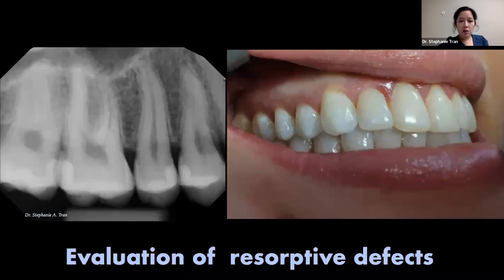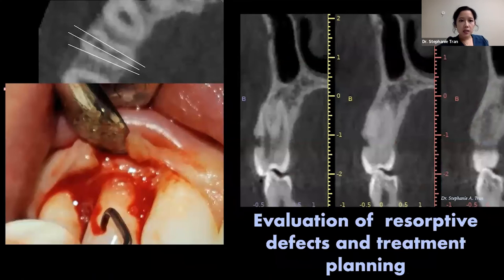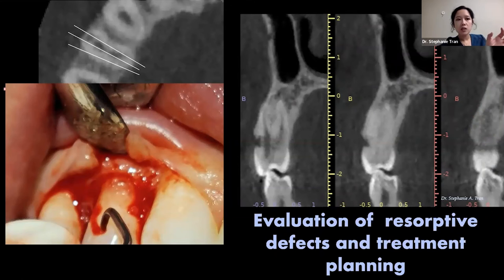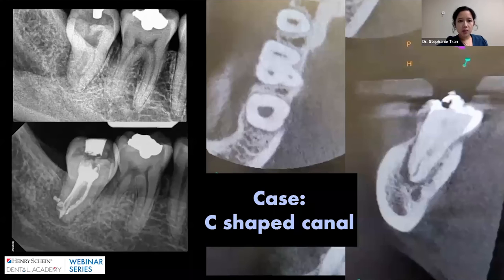Other resorptive defects, though, are much more localized. In this case, we can see that little radiolucency right at the cervical level — very clear and concise. A CT is still necessary to see how extensive it is. And we can see here that the CT shows it's nicely localized right at the cervical area, just barely approximating the canal and not extending all the way up and down the root. It only stays right at that cervical area, which tells me it was very treatable.